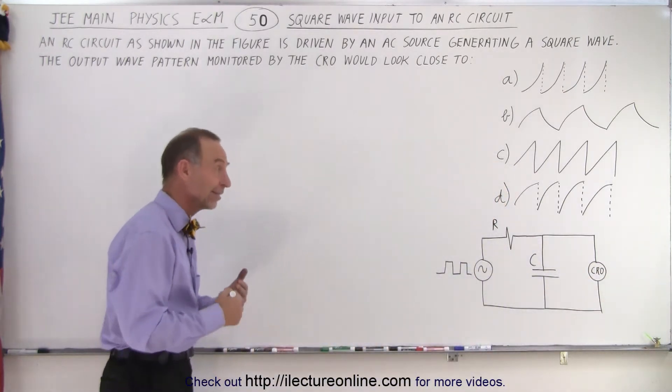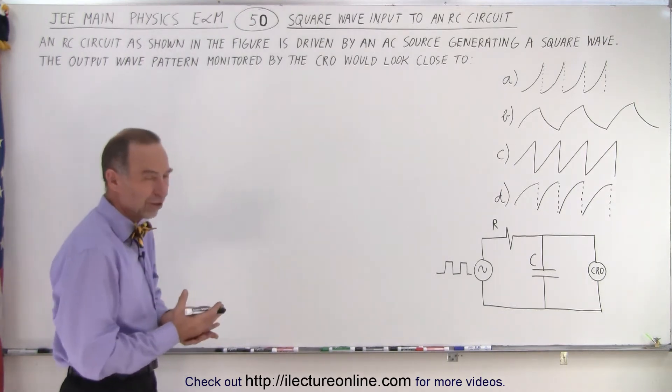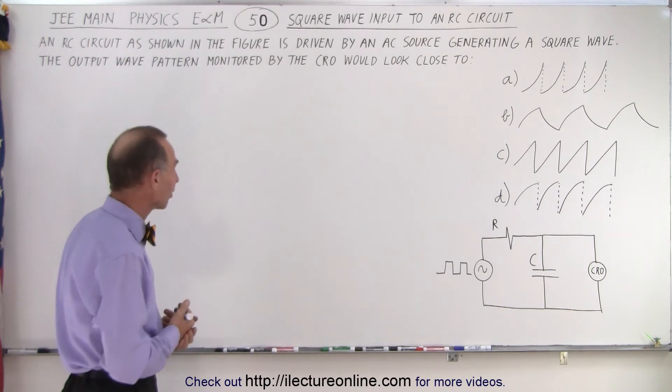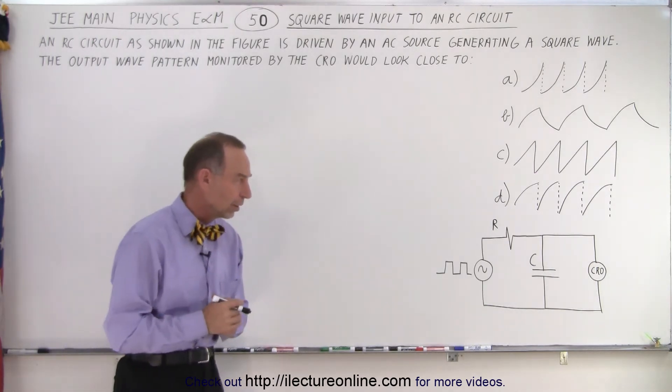Now what does CRO stand for? It's a cathode ray oscilloscope. It's an old-fashioned oscilloscope, the modern oscilloscopes of course are digital now. The output wave pattern monitored by the CRO would look close to, and they give us four possible answers.